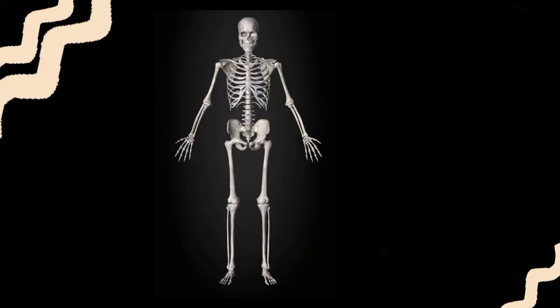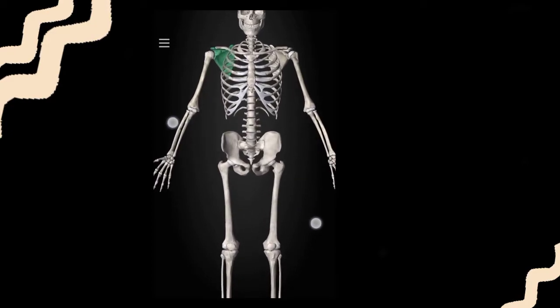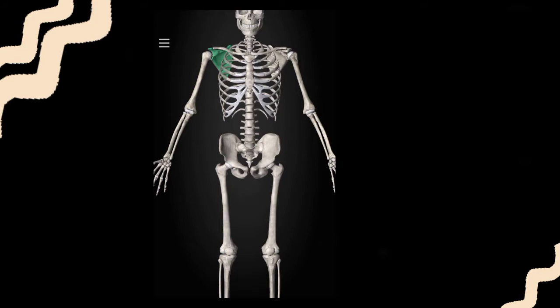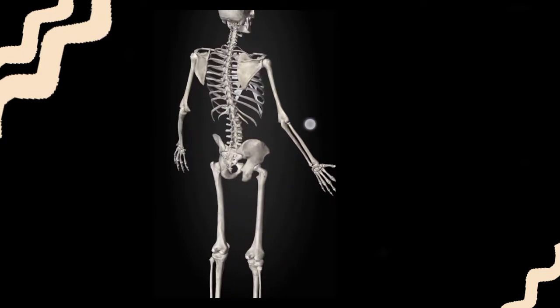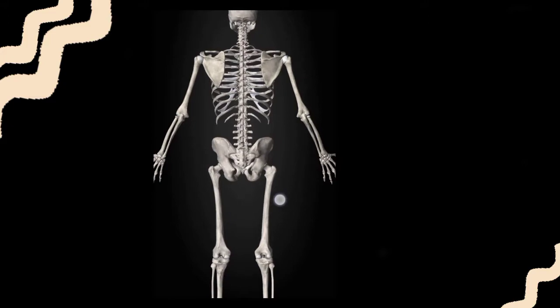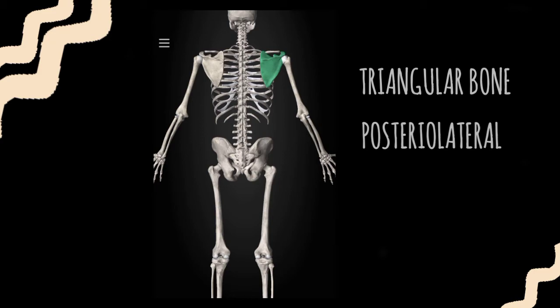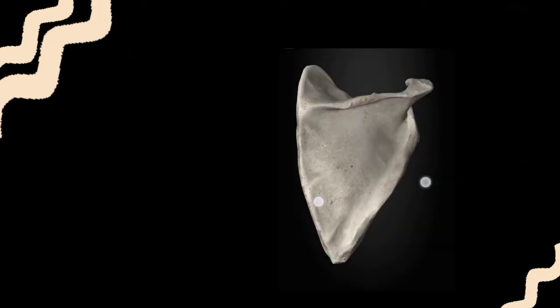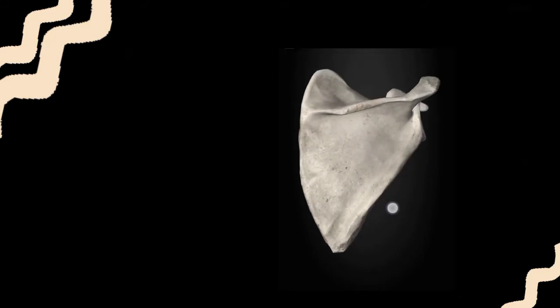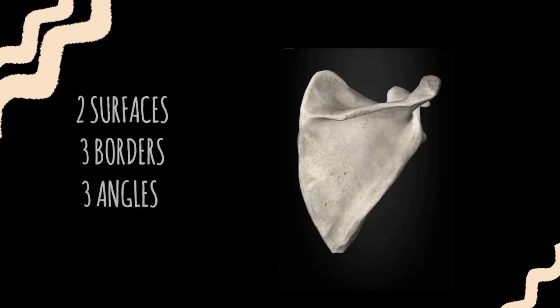Here's a skeleton, and as you can see the scapula is located here, marked in green. The scapula is located on the posterior lateral aspect of the human body. If we turn around the skeleton to the posterior side, you can see clearly it is a triangular bone. If we isolate the scapula itself, it is more like a triangular bone in shape.